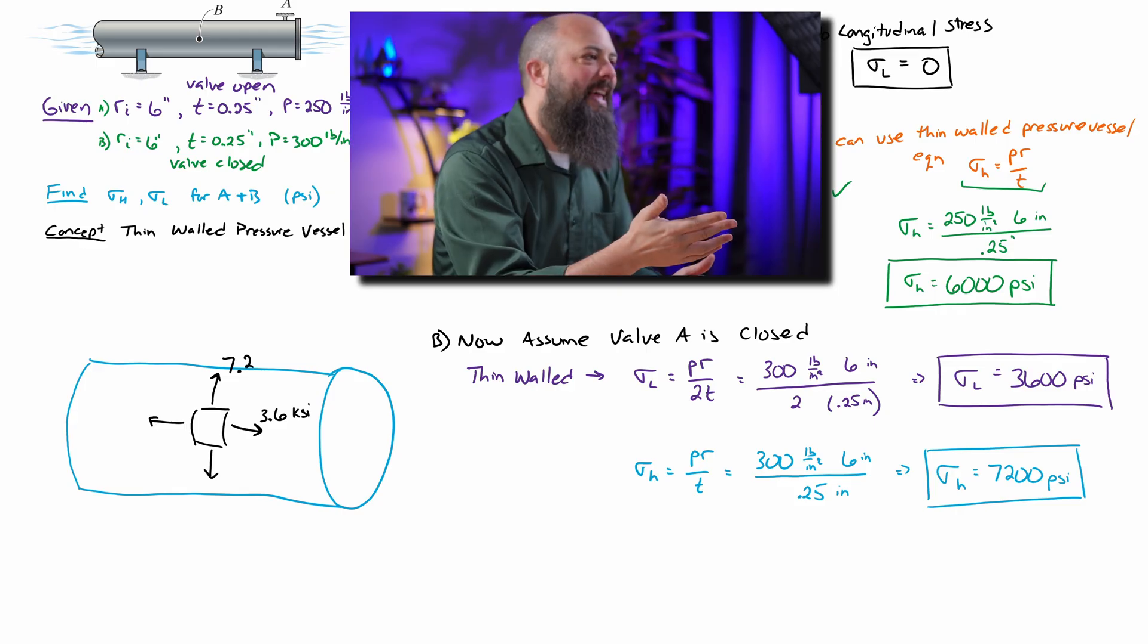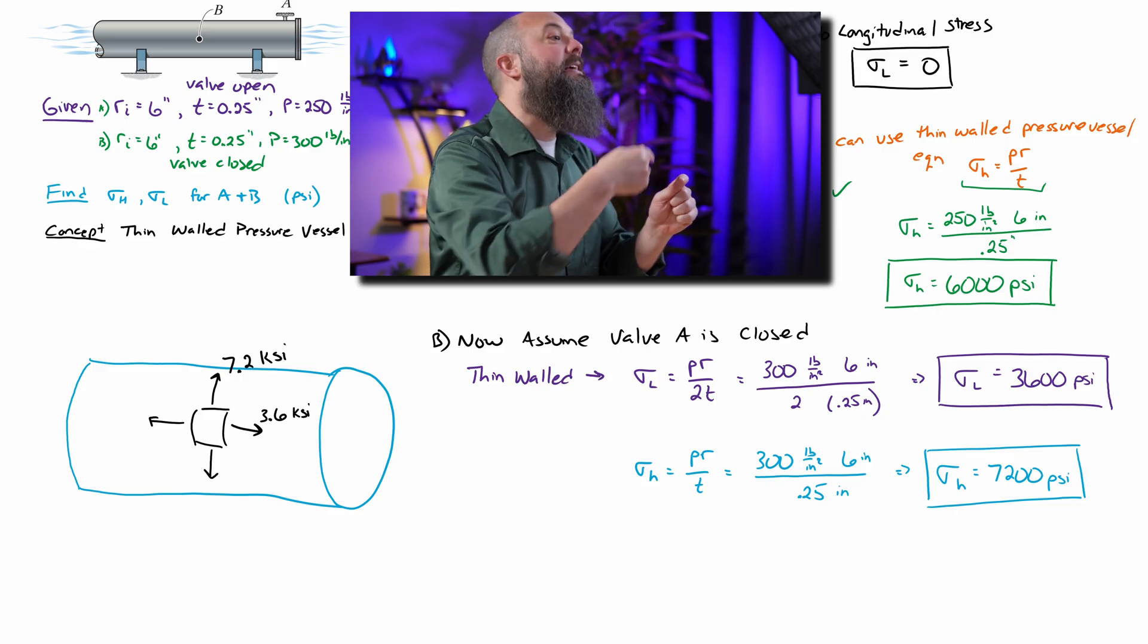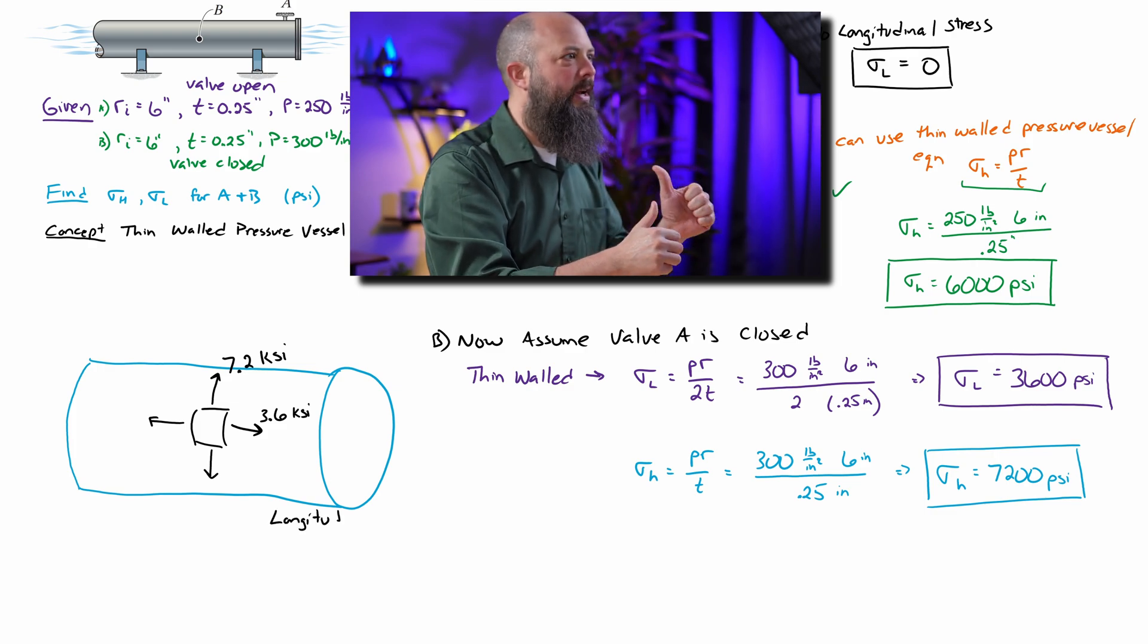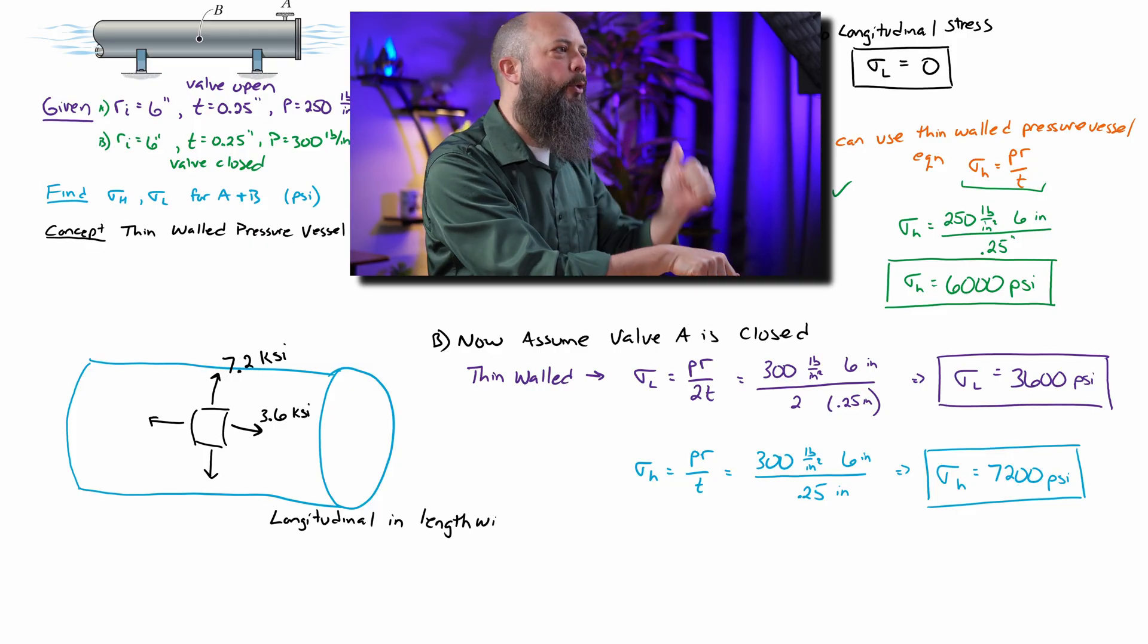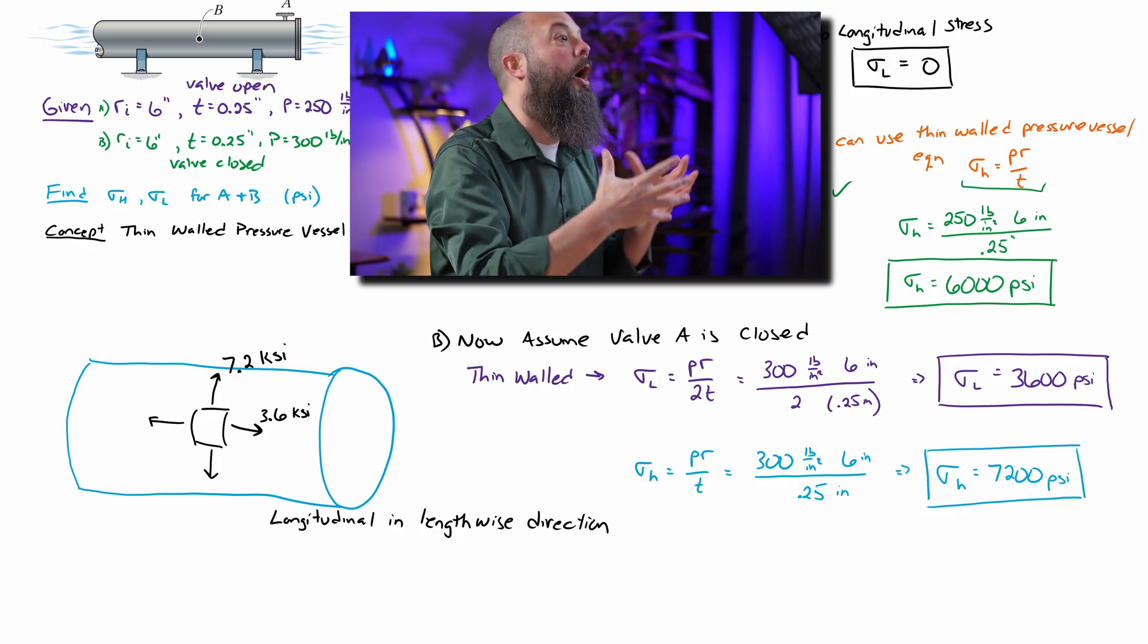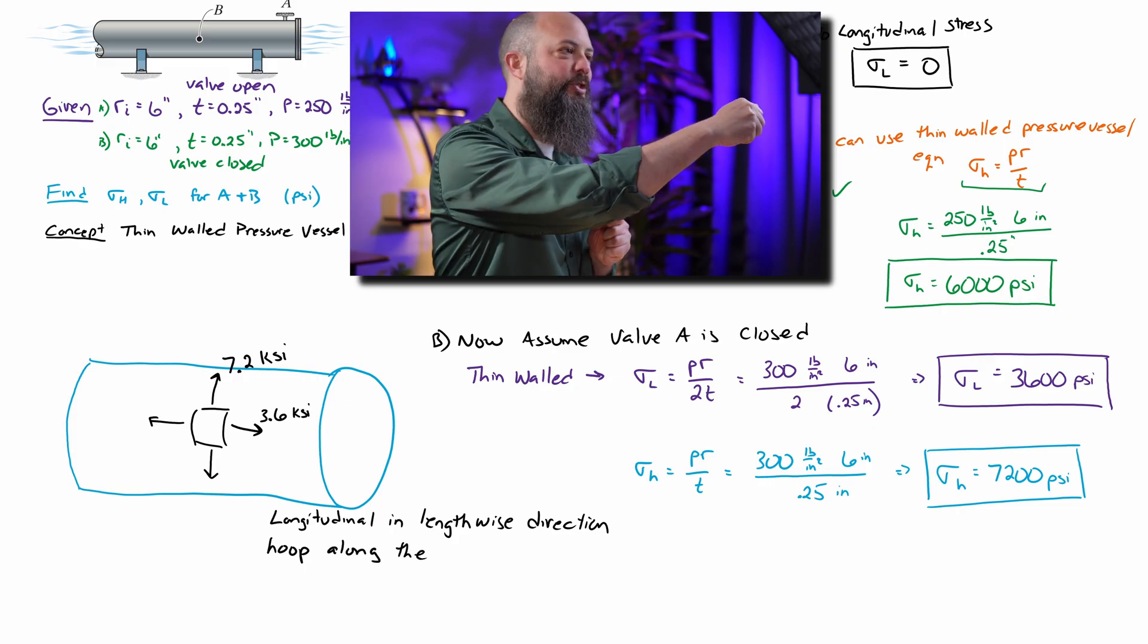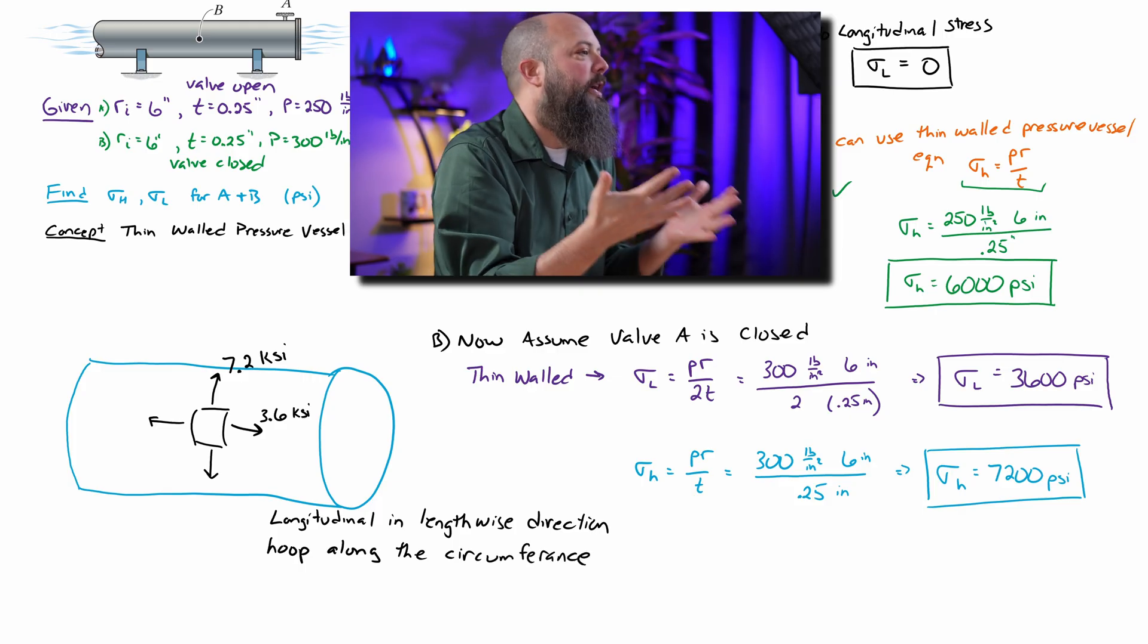7.2 KSI will be pointed kind of up and down in the direction of the ring. This hoop stress is pushing outwards, but the stress itself is not actually pointing outward of the radius. It's not towards the center of the circle and away from the center of the circle, it's in the direction of the circumference of the circle. From the perspective of that individual piece of the pipe, it's the circumference that's stretching, so it's stretching along the direction of the circle of the pipe.